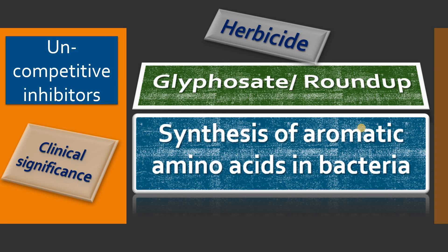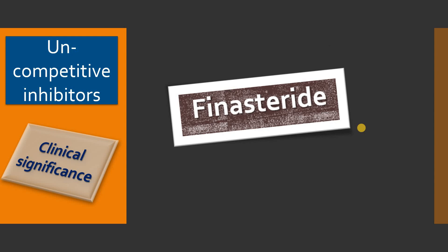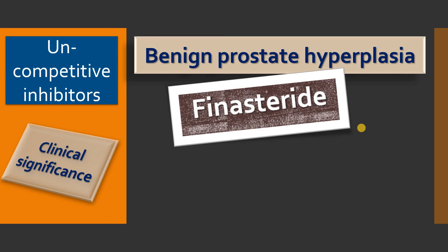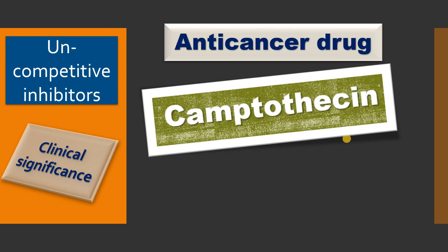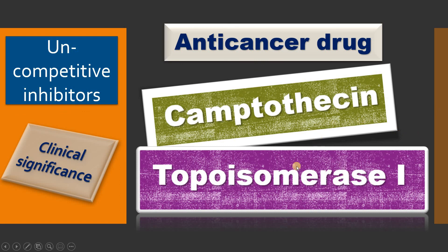Aromatic amino acids are very important for the survival of bacteria, so Glyphosate uncompetitively inhibits aromatic amino acid biosynthesis especially in bacteria. Finasteride is a drug used to treat benign prostatic hyperplasia, and it uncompetitively inhibits steroid 5-alpha reductase. Additionally, there is an anti-cancer drug that inhibits topoisomerase I, an enzyme involved in DNA replication, thereby preventing excess cell division especially in cancerous tissues. These are some examples of the clinical significance of uncompetitive inhibitors.